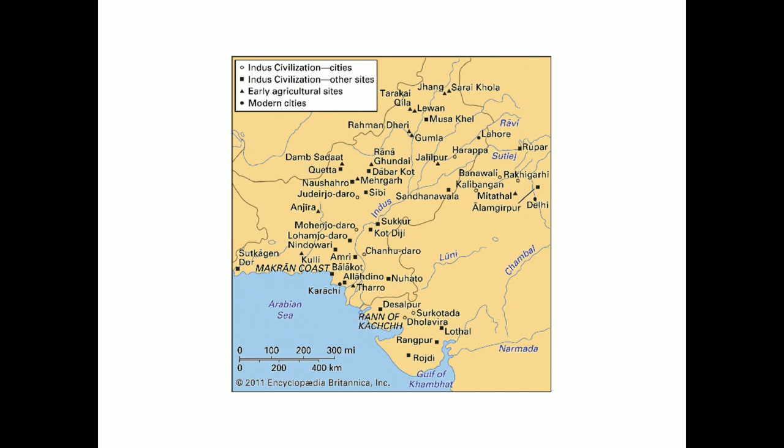Unit 1: The archaeological excavation first began in 1921 CE at Harappa in Punjab, on the banks of the river Sutlej. Here is a map of the Harappan Civilization shown to you, students. That is how the civilization came to be known as the Harappan Civilization or the Indus Valley Civilization.